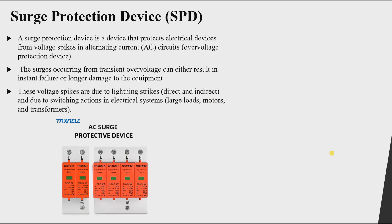Voltage spikes occur due to two main reasons: number one, lightning strikes coming from the sky — which can be direct or indirect — and number two, switching actions in the electrical system. When we switch large loads, motors, or transformers on and off, it can lead to large transient overvoltages.